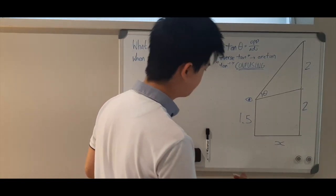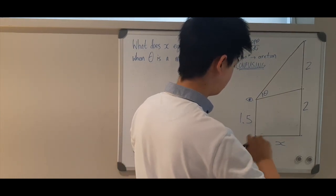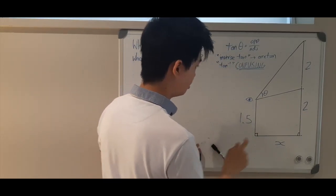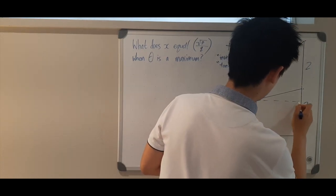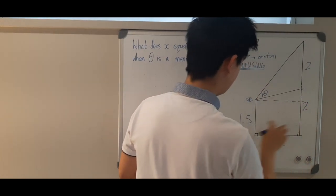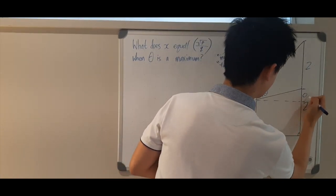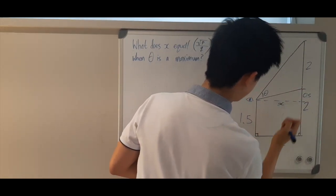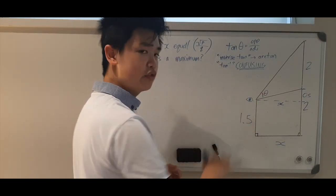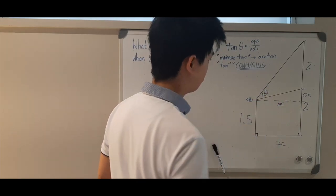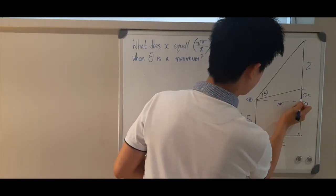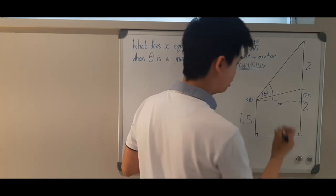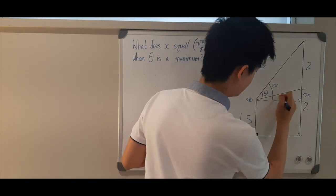Let's define some of the lengths. We can see that these two lengths are parallel to each other, so we can find what this length is here. So 2 minus 1.5 is 0.5, so we know that this length is 0.5, and this length up here is also x. Now theta is in a tricky situation because we don't exactly have a right angle triangle to work with, so we're going to use this triangle here and split the angles into alpha and beta — calling this angle alpha and this angle beta.